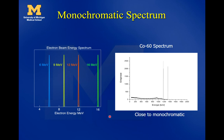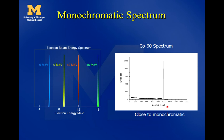Examples of monoenergetic beams include the electron beams in our linacs at 6, 9, 12, and 16 MV — these thin little Gaussians show the spectrum of electrons coming out, narrowly bunched right around each energy. Cobalt-60 is also nearly monoenergetic: it has gamma rays coming from its nucleus, dominated by two main peaks around 1.2 MV. These are examples of monoenergetic x-rays, in contrast to the polychromatic spectrum from an x-ray tube.